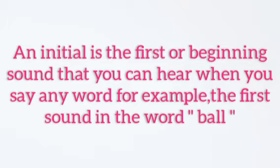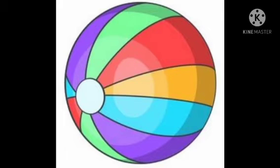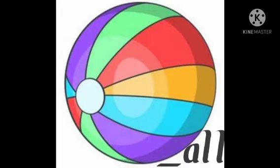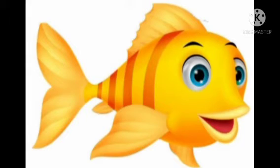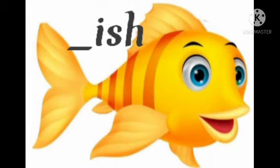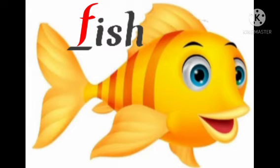For example, the first sound in the word ball — B is the initial sound. Next, fish — F is the initial sound.